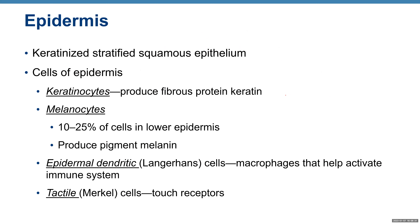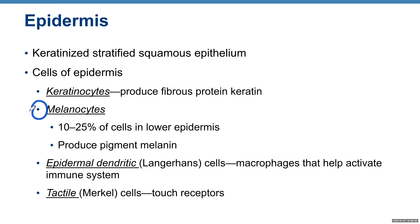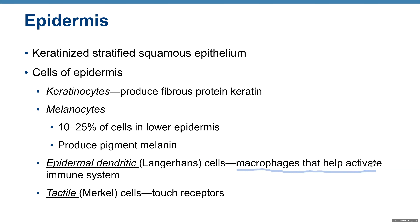We're going to start with the epidermis, the most superficial layer of your skin. It's made of keratinized stratified squamous epithelium. Cells of the epidermis include keratinocytes — they are the most abundant cells of the epidermis and they produce keratin. Melanocytes make up 10–25% of cells in the lower epidermis and produce pigment melanin that gives your skin its color. We also have epidermal dendritic cells (Langerhans cells is the older name) — they are macrophages that help activate the immune system — and tactile or Merkel cells, which are touch receptors.